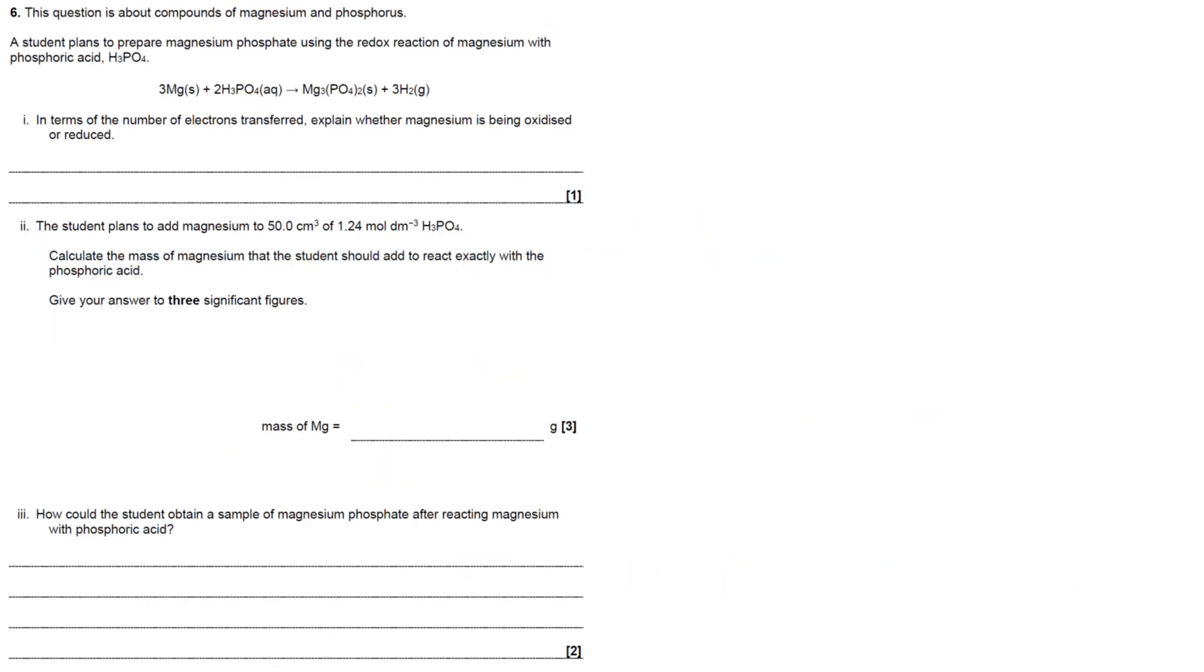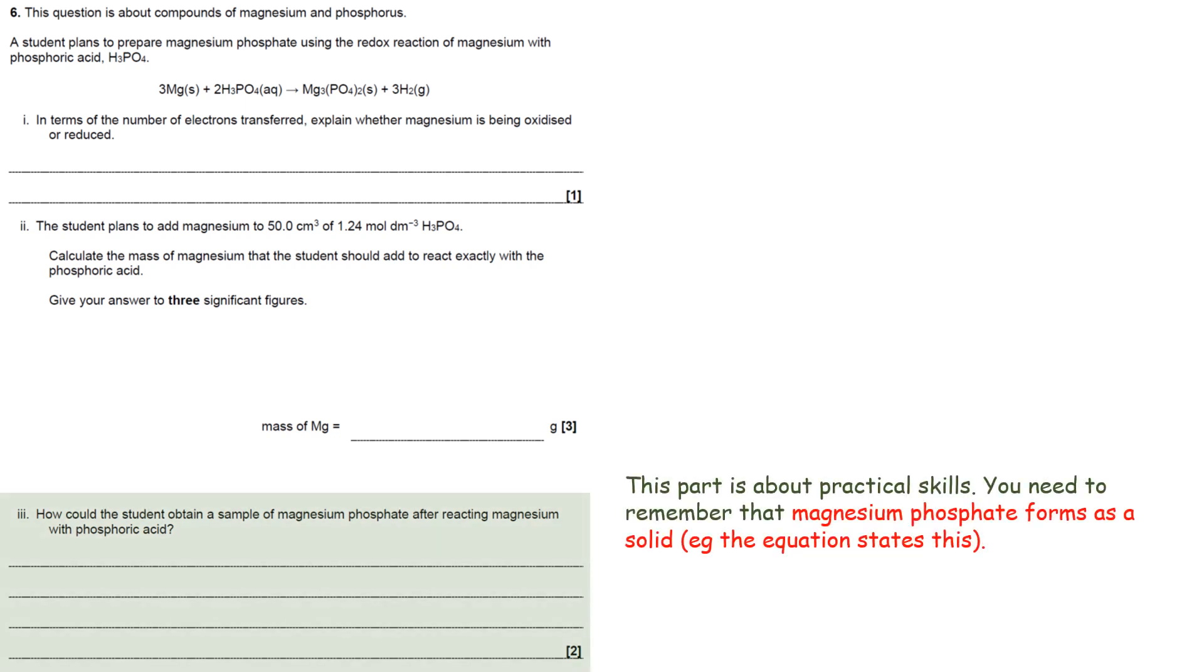The final part is having a look at practical skills. So you need to remember that the magnesium phosphate forms as a solid. So if I just point to the magnesium phosphate in the equation, you can see its state symbol is S and not AQ.